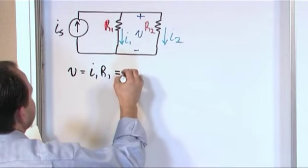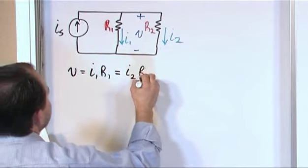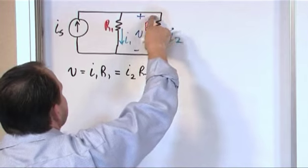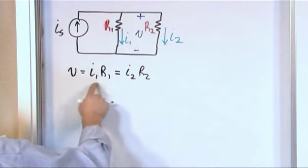But it's also equal to I2 times R2 because that's the current and the resistance over here, and they're all connected in parallel so the voltage is the same.